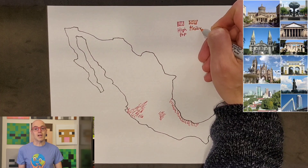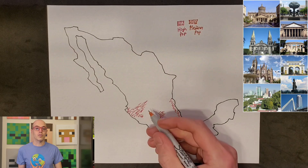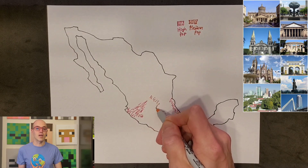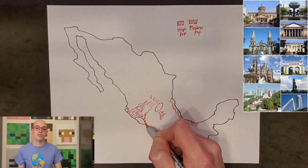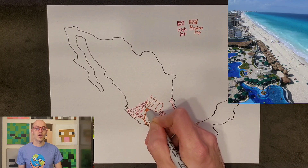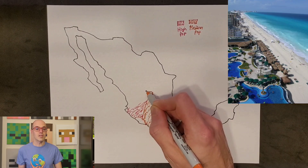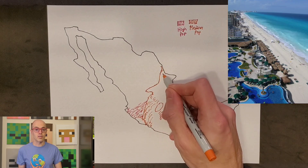Beyond Mexico City, Mexico boasts several other major cities, including Guadalajara in the west, known for its cultural heritage, and Cancun in the east, famous for its stunning beaches.